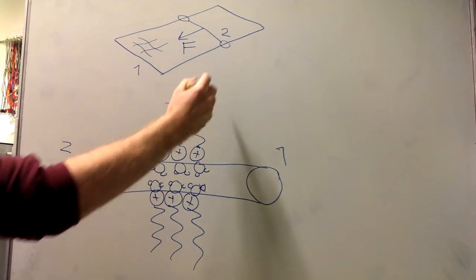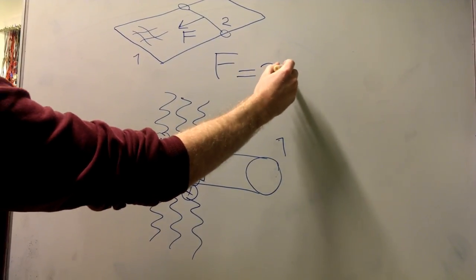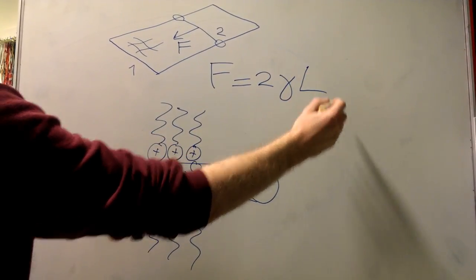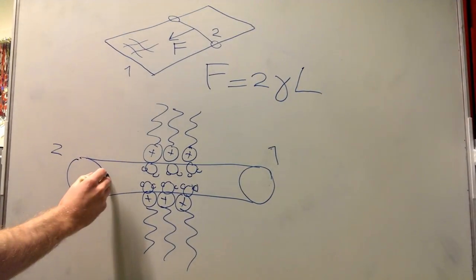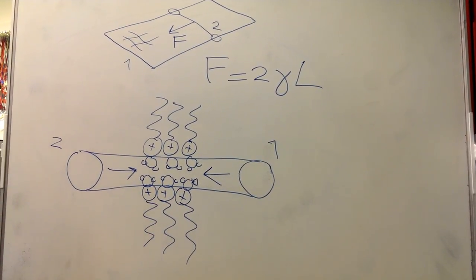The force acting on the mobile bar is given by the surface tension gamma multiplied by the width L of the device. However, recall that our soap surface actually consists of two layers. So we must multiply by two.